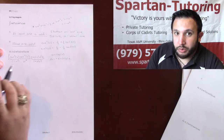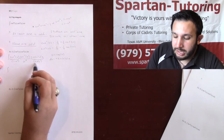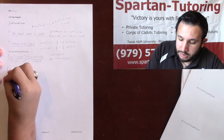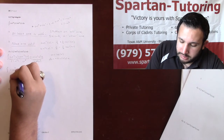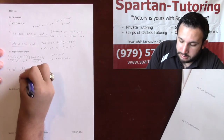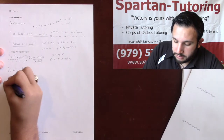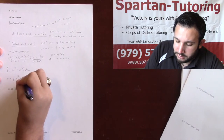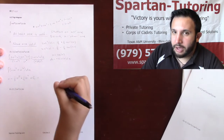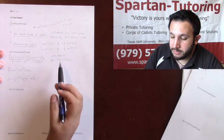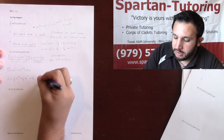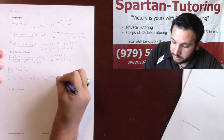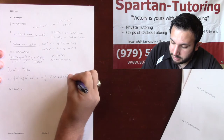Now I distribute the negative and u to the fourth into the expression. Don't forget the negative. Distributing gives negative u to the fourth plus u to the sixth du. Integrating that gives negative one-fifth u to the fifth plus one-seventh u to the seventh plus C. After writing plus C, plug x back in — since u equals cosine x, the final answer is negative one-fifth cosine to the fifth x plus one-seventh cosine to the seventh x plus C.